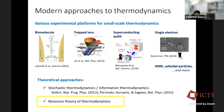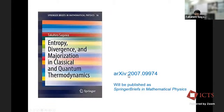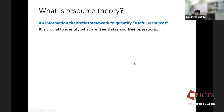There are also several conceptual differences between these two approaches. Let me also advertise my recent book on resource theory of classical and quantum thermodynamics, titled 'Entropy Divergence and Majorization in Classical and Quantum Thermodynamics.' It is a Springer Brief of about 150 pages, and the early manuscript is already available on arXiv. It will be published next month.